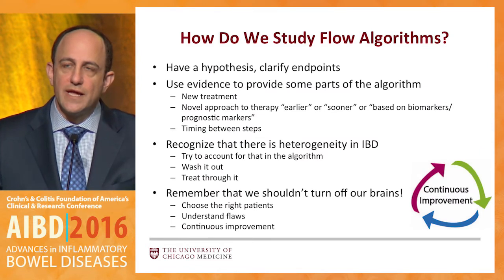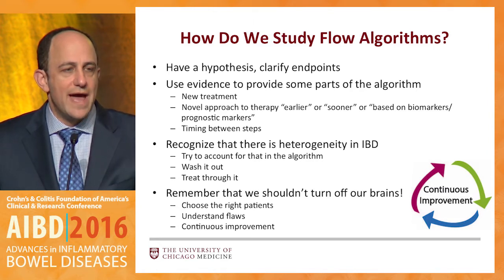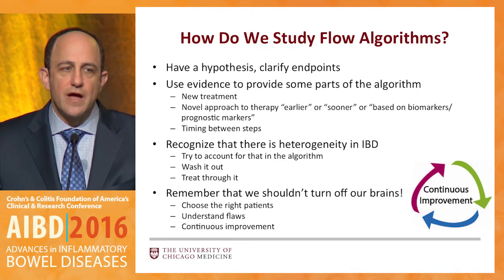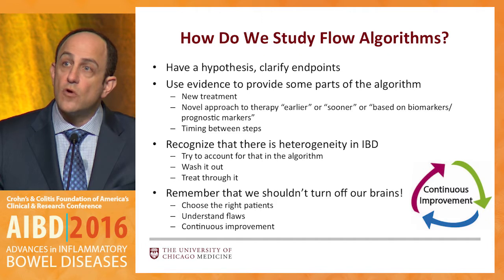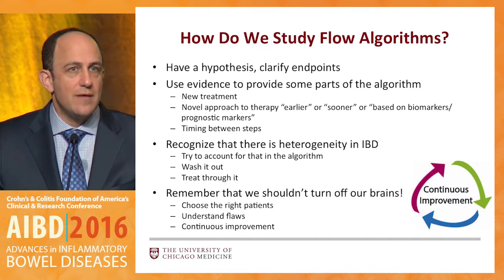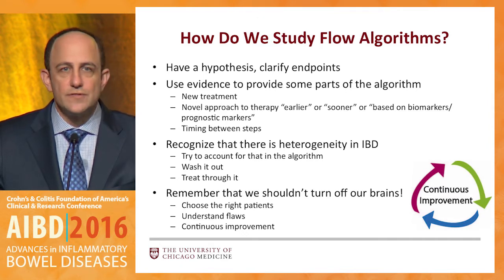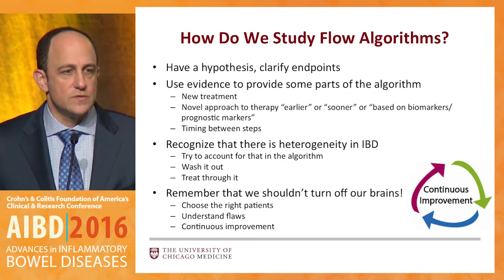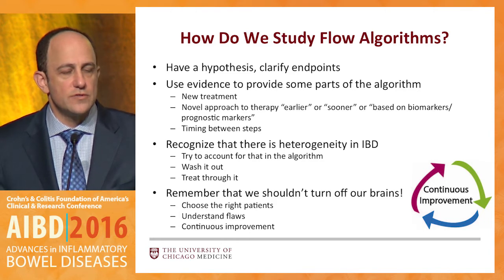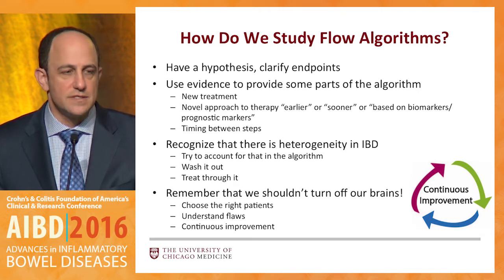In order to study this properly, it's really complex. You have to have a hypothesis and clarify your endpoints. You need to use evidence to provide parts of your algorithm so you understand when you might incorporate different strategies and treatments, and understand why you might use one treatment strategy earlier in the algorithm. You have to think about how you time this — when would you look, when do you remeasure, when do you reassess. The devil is always in the details. You also have to recognize the tremendous heterogeneity in IBD, not just in Crohn's but also in UC. You have to understand when or how you might wash out therapies before moving to another one. And remember, choose the right patients — don't just plug everyone into the same algorithm.